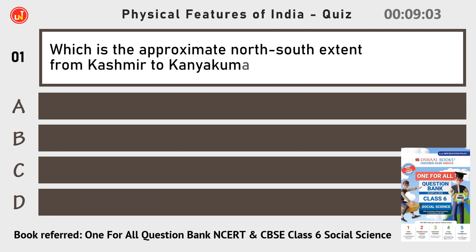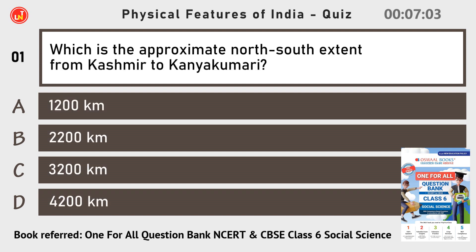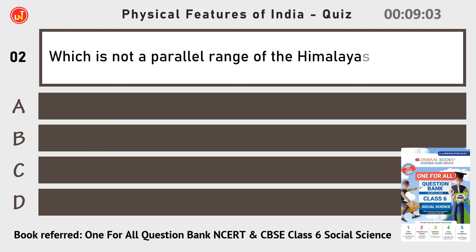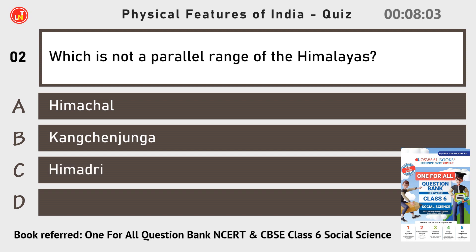Which is the approximate north-south extent from Kashmir to Kanyakumari? Which is not a parallel range of the Himalayas?